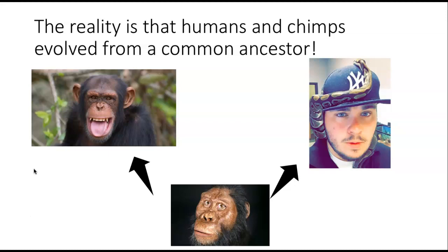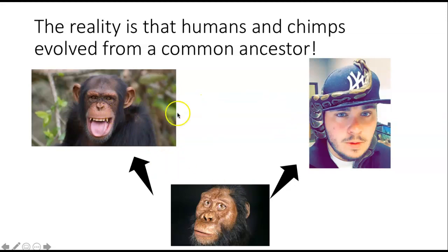Somewhere down the timeline of Earth, a common ancestor was around, and then over billions of years we evolved to be genetically distinct species. We've already talked about ways in which the genetic code of an organism can be changed and ways in which this evolution can occur, so we'll go back over those as we go through this lecture.